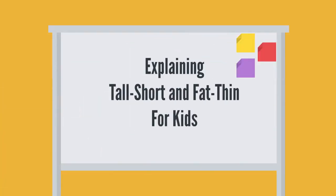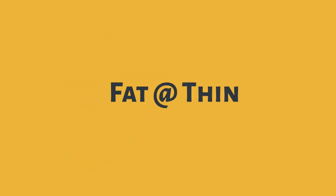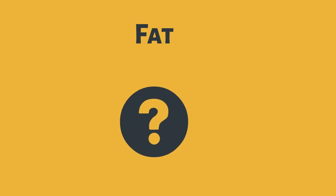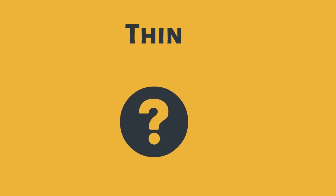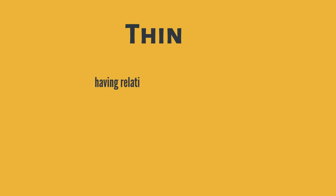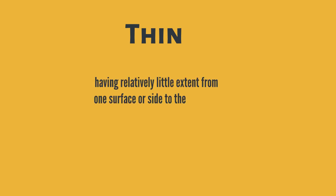Explaining tall, short, fat, and thin for kids. Fat and thin. What does the word fat mean? Having too much flesh on it and weighing too much. What is the meaning of the word thin? Having relatively little extent from one surface or side to the opposite.